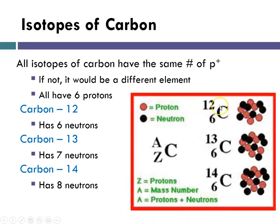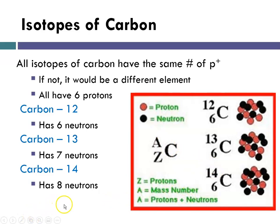Another way that periodic tables sometimes display elements is with nuclear notation. You'll see carbon with a subscript 6 and superscript 12, 13, or 14. The atomic number 6 is called the Z number, and the mass number — in this case 12, 13, or 14 — is called A, the mass number. This is just one more notation that some textbooks and periodic tables use.